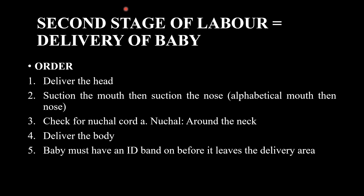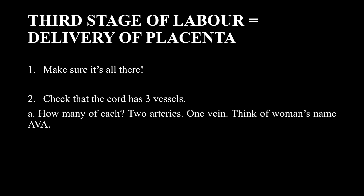To summarize the order for the second stage of labour: first, delivery of the head; second, suction the mouth and nose; third, check for a nuchal cord; fourth, check the neck and deliver the baby's body; fifth, apply the baby's identity band. This completes the second stage of labour.